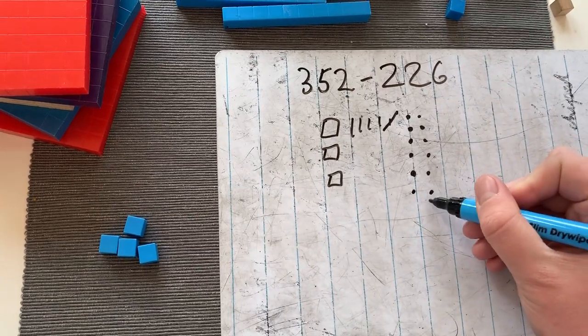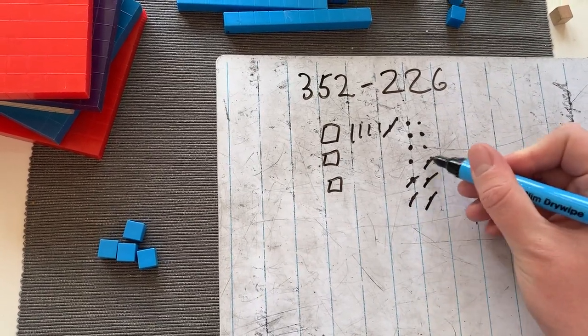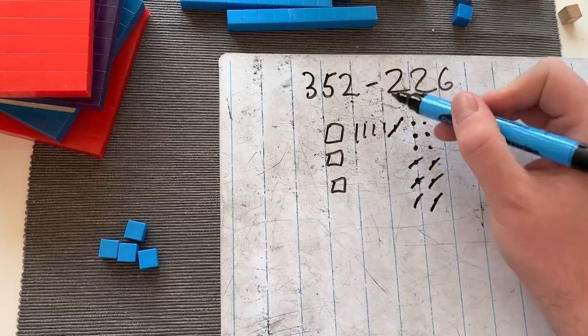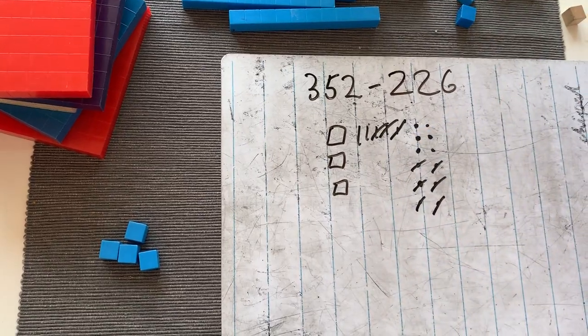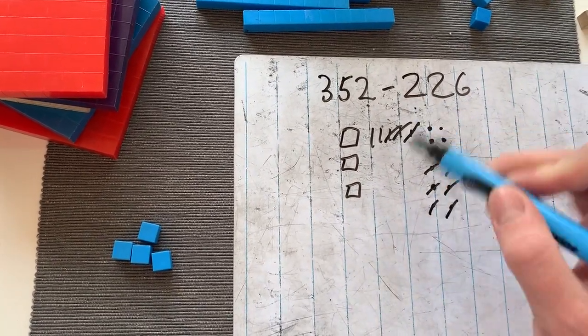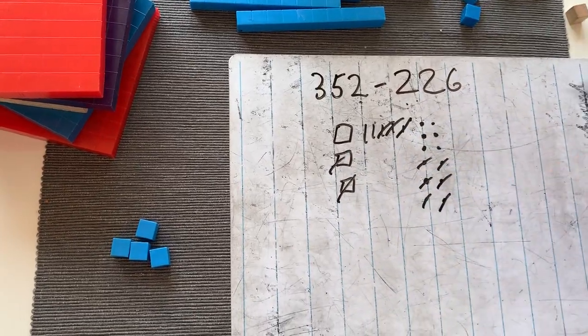Now I'm going to take away six ones: 1, 2, 3, 4, 5, 6. So we've got six ones left. Lovely. Now I'm going to take away two tens. Easy. That bit's grand. And then I'm going to take away two hundreds. So I'm left at 126.